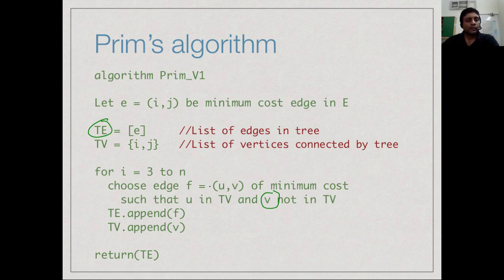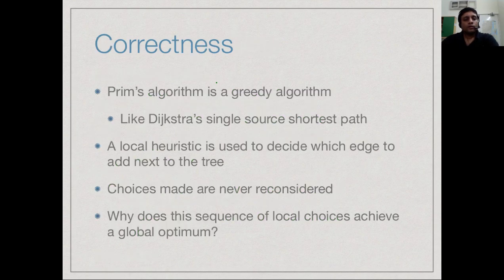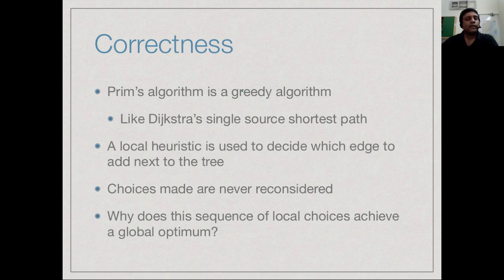The claim is that because we always choose the minimum cost edge, the overall result is a minimum cost spanning tree — though we will have to prove this. Like Dijkstra's algorithm, Prim's algorithm is a greedy algorithm. At each point we look in the neighborhood of the current tree, find the nearest vertex connected by the shortest edge, and add it. This is a local choice and we keep making local choices, never going back to reconsider them.